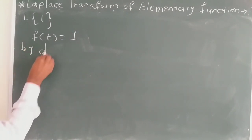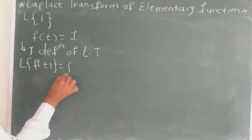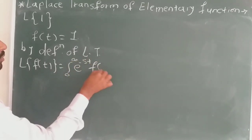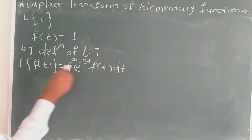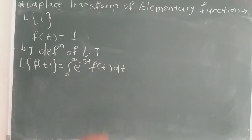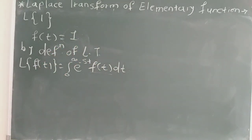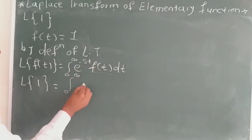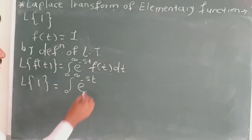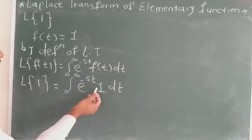By the definition of Laplace transform, the Laplace transform of f(t) is equal to the integration over 0 to infinity of e raised to minus st, f(t) dt. We replace f(t) by 1, so we get: Laplace transform of 1 is equal to the integration over 0 to infinity of e raised to minus st into 1 dt.